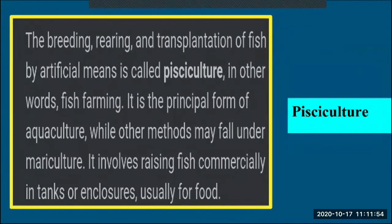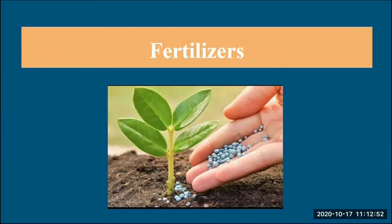Pisciculture refers to the breeding, rearing, and transplantation of fish by artificial means — in other words, fish farming. It is the principal form of aquaculture, while other methods may fall under mariculture. It involves raising fish commercially in tanks or enclosures, usually for food.